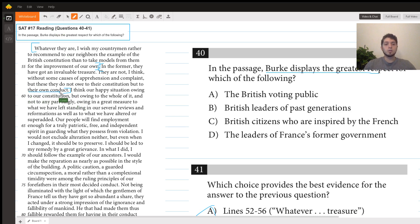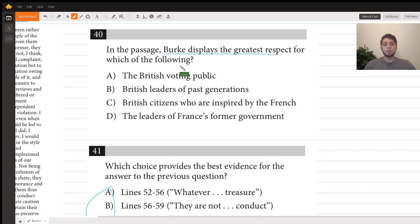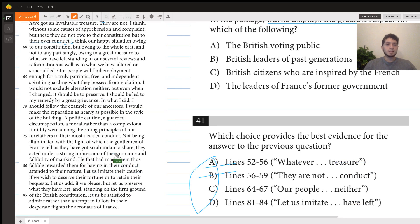Again, this doesn't tell us anyone who Burke displays great respect for, so I don't think it's very plausible. C says 64 through 67, which is down here.